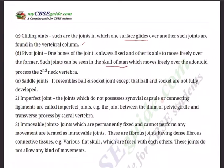Fourth: pivot joints — one bone of the joint is always fixed and the other moves freely over it. Such joints can be seen in the skull, which moves freely over the odontoid process, the second neck vertebra. Fifth: saddle joints — these resemble ball and socket joints except the ball and socket are not fully developed. Second type: imperfect joints — joints which do not possess a synovial capsule.